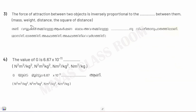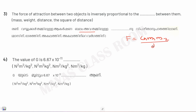The force of attraction between two objects is inversely proportional to the square of the distance between them. The force of attraction between two objects is equal to G times m1 times m2 divided by d squared.